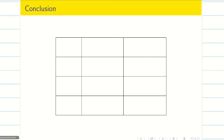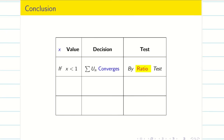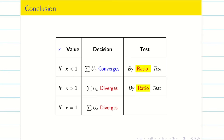Now writing the final table: if x < 1, summation un converges by ratio test; if x > 1, summation un diverges by ratio test; if x = 1, summation un also diverges by Raabe's test. We complete the problem here. Hope you understand.